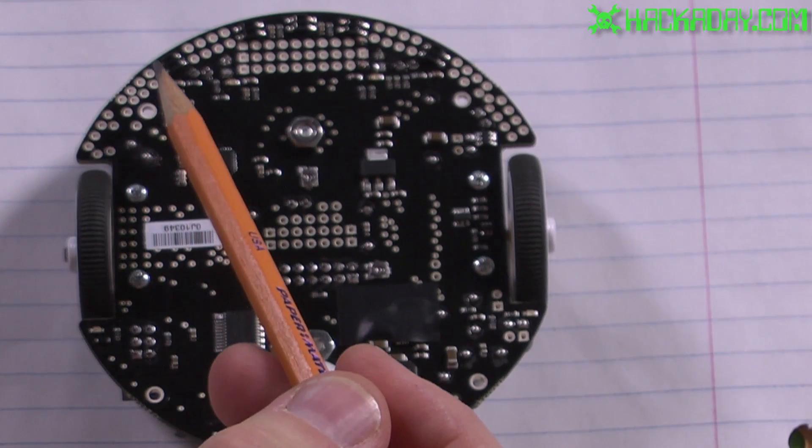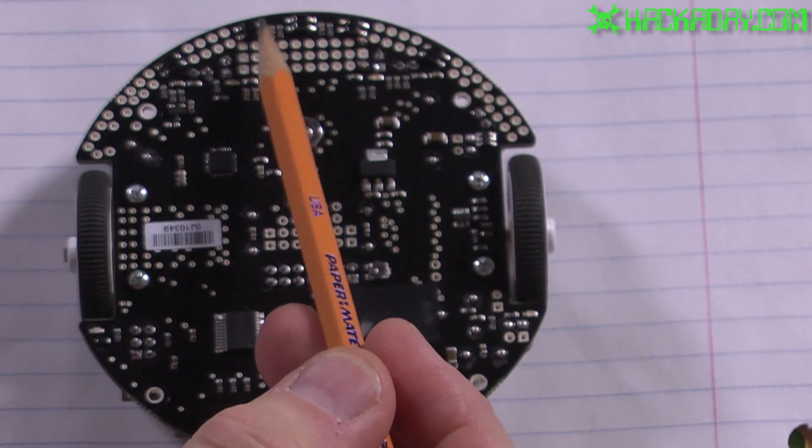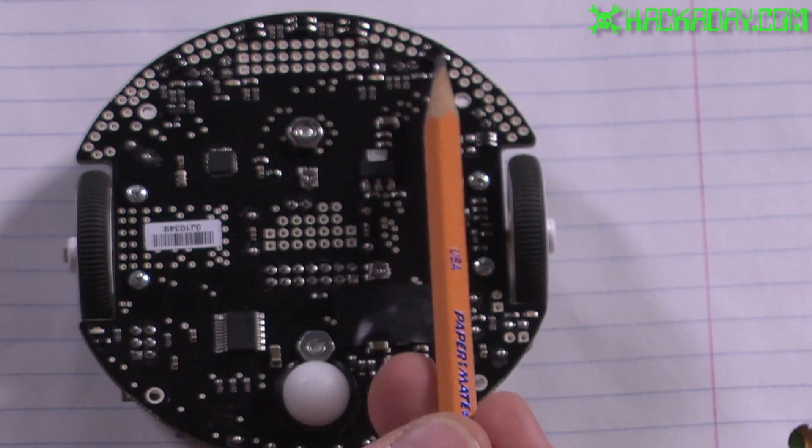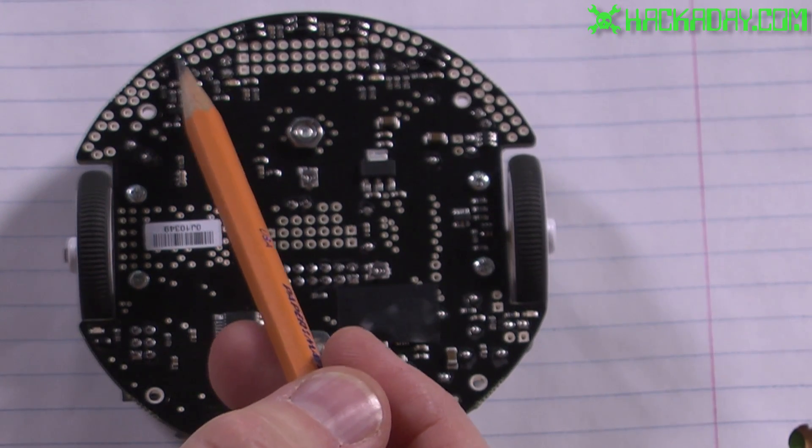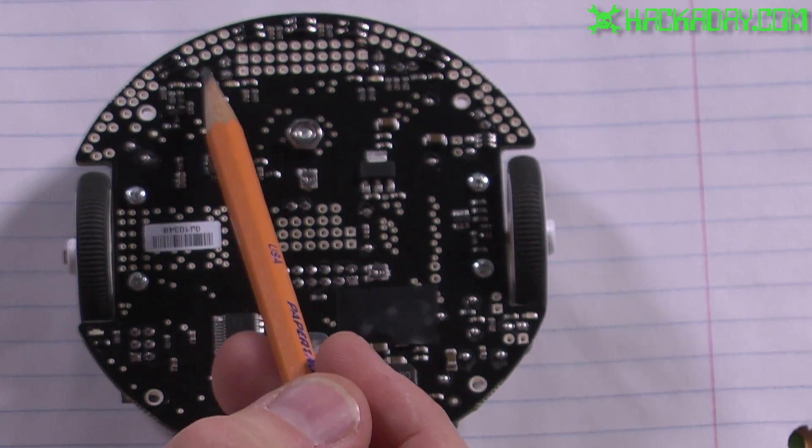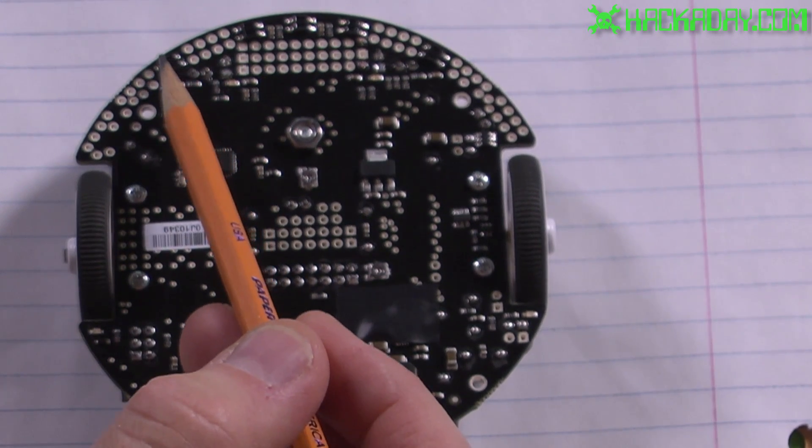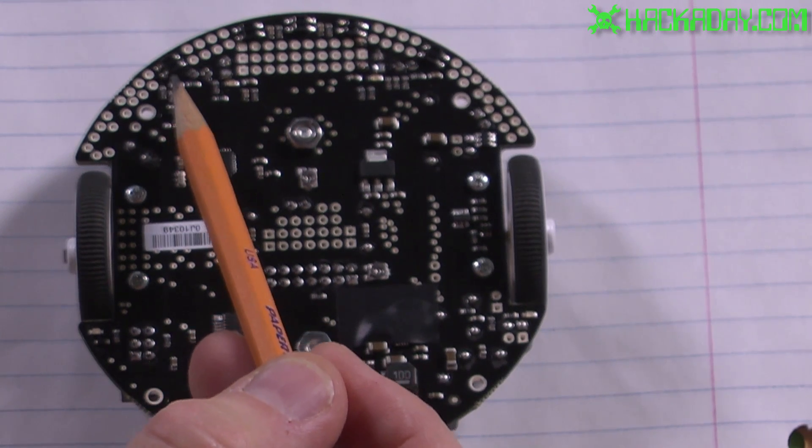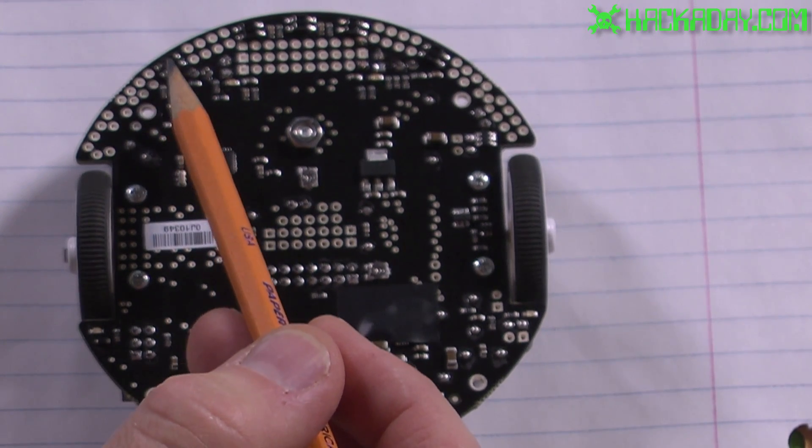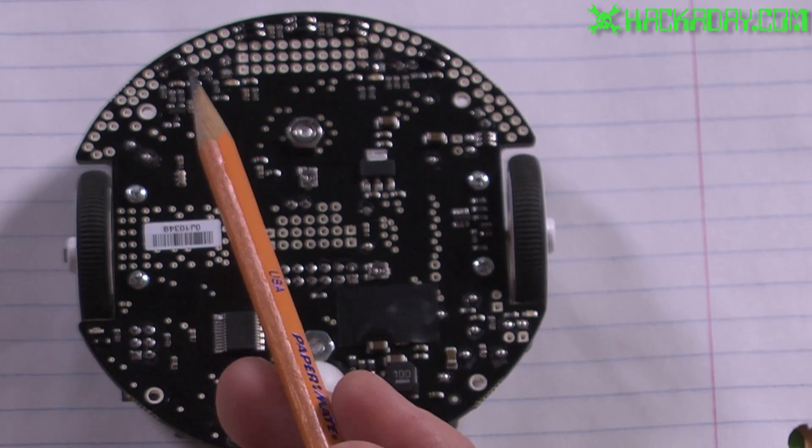Right here on the bottom of the robot we have five little sensors. These sensors have two little windows in them. One of them, behind one of them, is an infrared LED. Behind the other is a photo transistor.